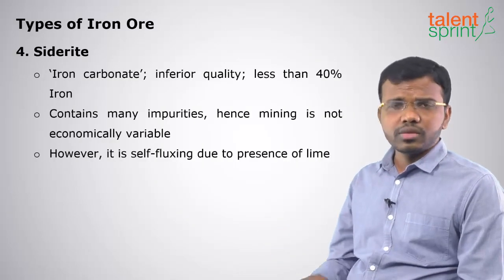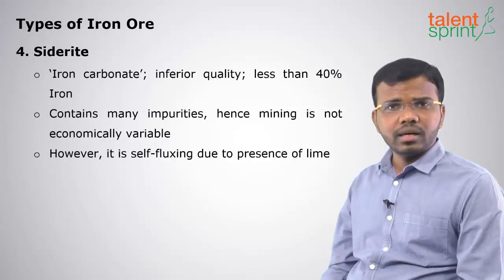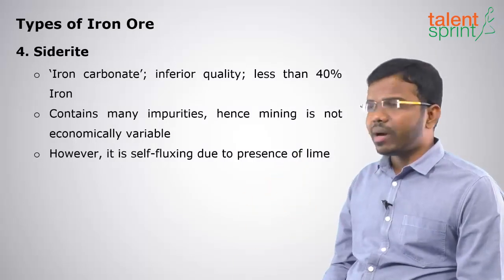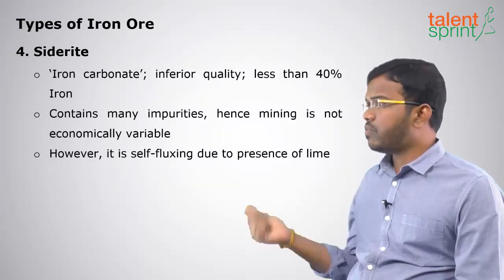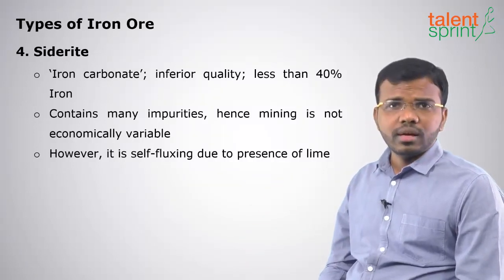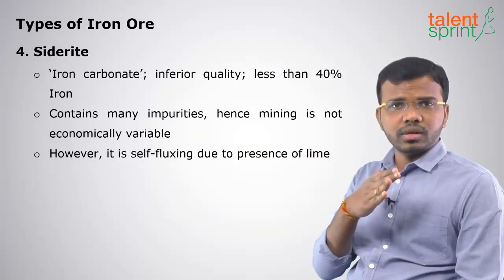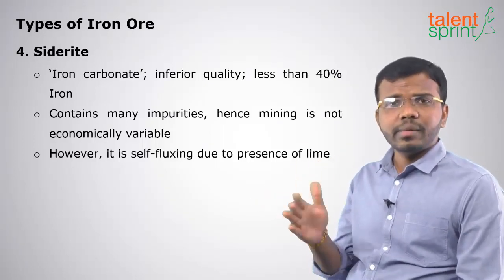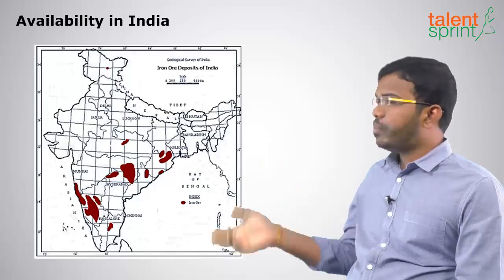The fourth type is siderite, a very inferior quality ore with very low iron content — mostly less than 40 percent. It contains impurities and mining is not economically viable. It is self-fluxing due to the presence of lime content in it. To summarize: first grade is magnetite with highest iron content, next is hematite, then limonite, and last is siderite.